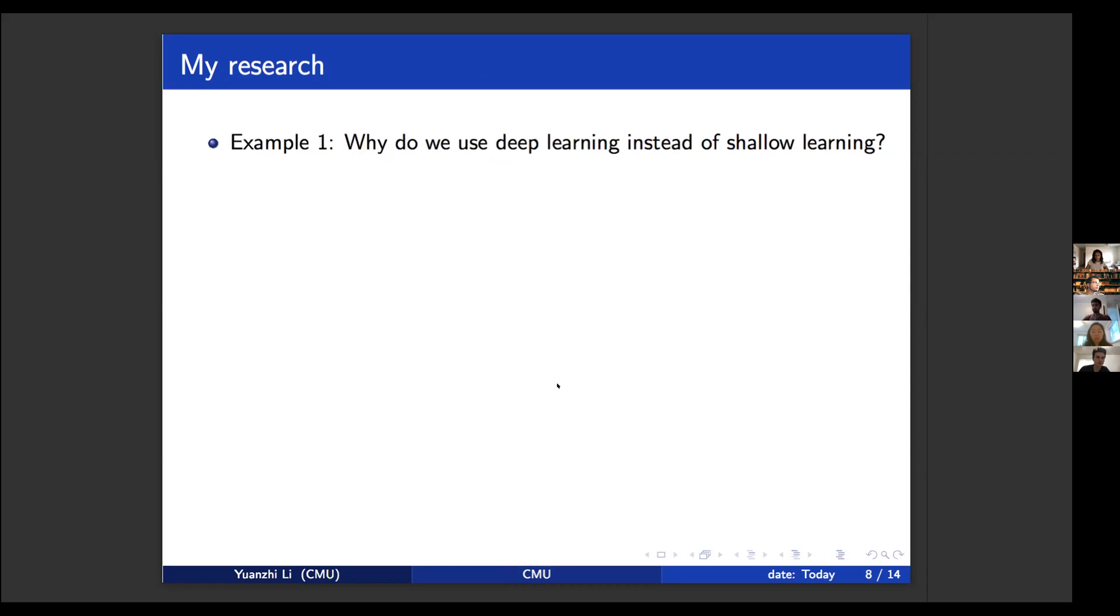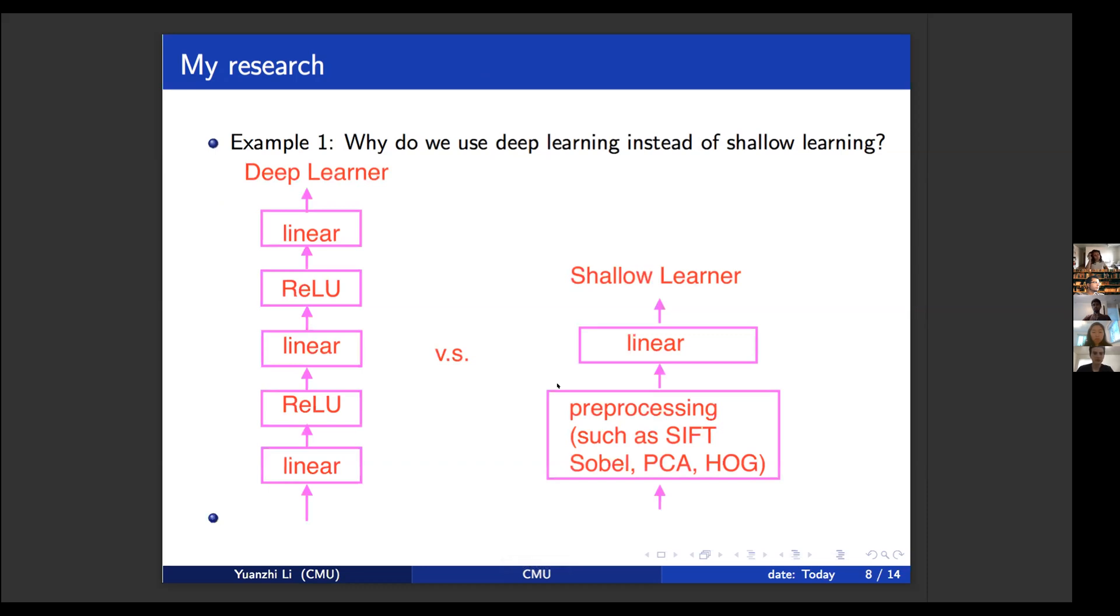Just to give you an example about my research. The first question, of course, everyone wants to ask is why do we actually use deep learning instead of shallow learning? Intuitively, I mean, you have all of these experimental results demonstrating that deep learning works so well in practice, but mathematically, what can you say about why should we use deep learning instead of shallow learning? So you'll have this deep learning that has multiple units of linear plus nonlinearity versus these shallow learners that only have one preprocessing layer that collects the features and goes through a linear combination of them.